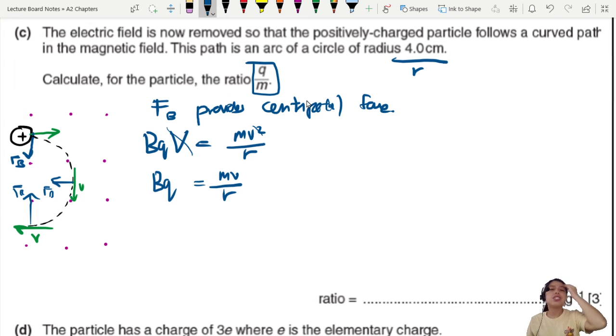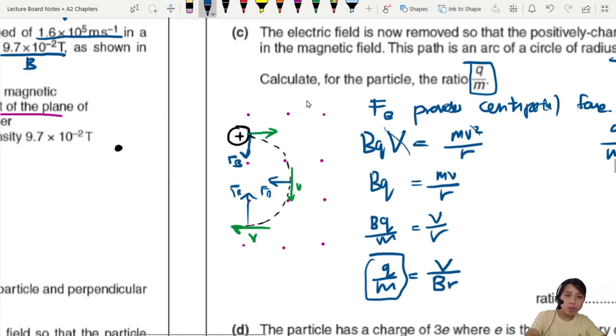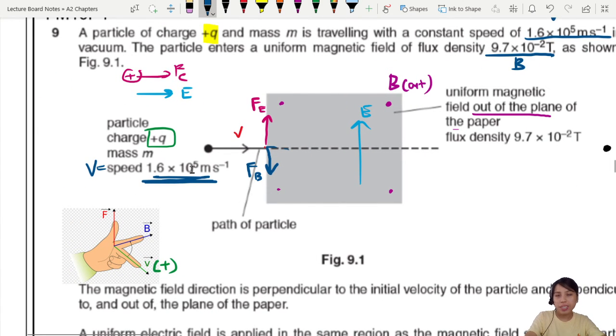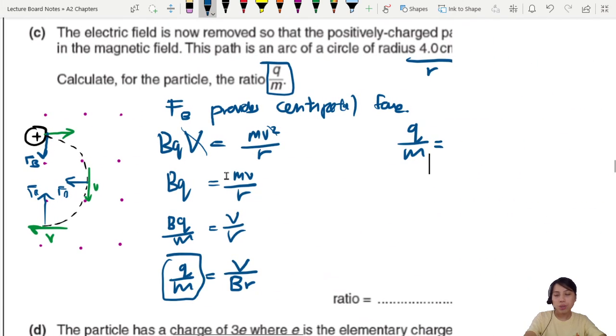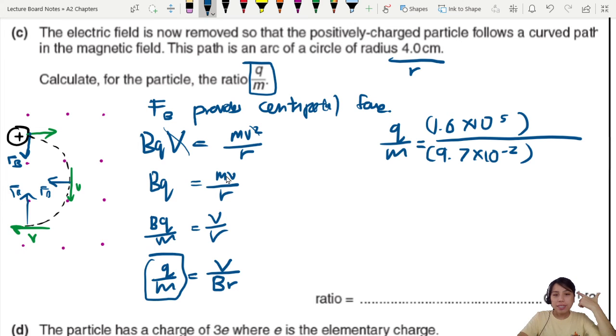So we're going to equate both of the equations. BQV, which is the magnetic force, equals the expression for centripetal force, MV^2 over R. Divide both sides by V first, get rid of the V. So this will be MV over R. How to find Q over M? Can we rearrange this? Divide both sides by M, so I have BQ over M. Divide both sides by B, so I have Q over M equals V over BR. There we go, we got our ratio of Q over M now.